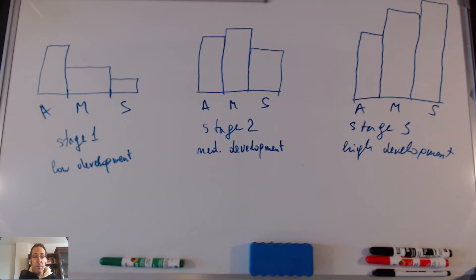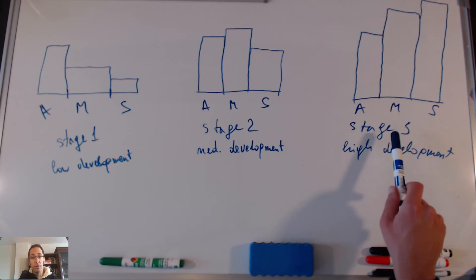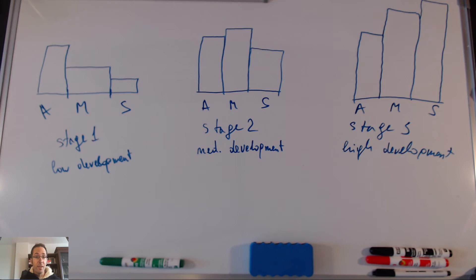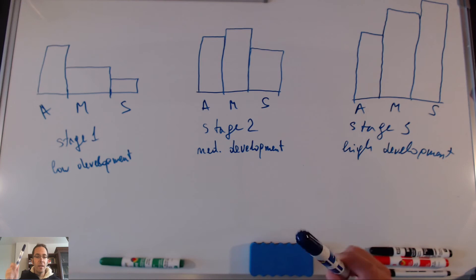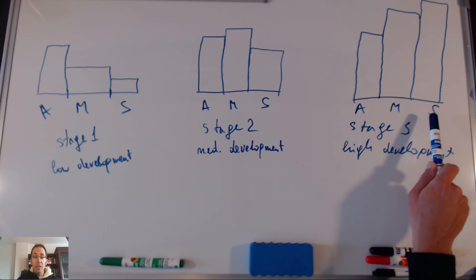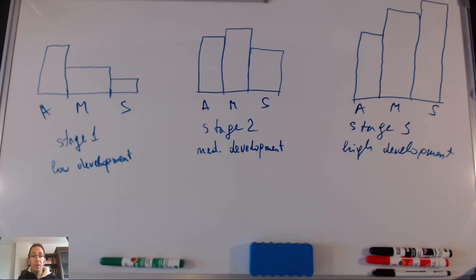What does this imply for businesses? If a business is engaged in agricultural production, it will expand slowly in times of development. If a business is engaged in manufacturing, it will expand rapidly, especially around stage two. If the business is engaged with services, we'll see expansion in stage two but it will really skyrocket in stage three. So when the economy is growing, the firms that will probably benefit the most, in general terms, are the ones in the service sector.